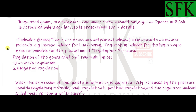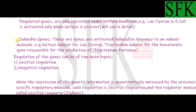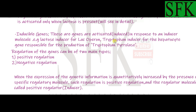A category of regulated genes is inducible genes — those genes which are activated, or induced, in response to an inducer molecule. If a molecule is present, it will induce the activation of these genes. The lac operon contains inducible genes because lactose can induce their expression. The lac operon is a complete functional unit of DNA responsible for the control of a set of genes controlled by a single operator and a single promoter.